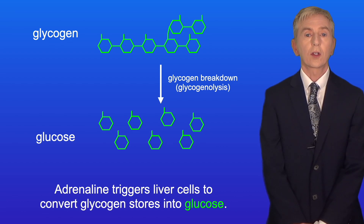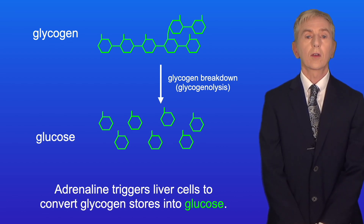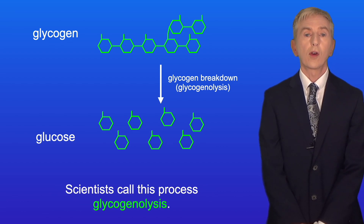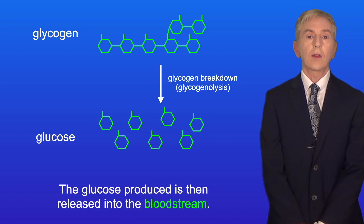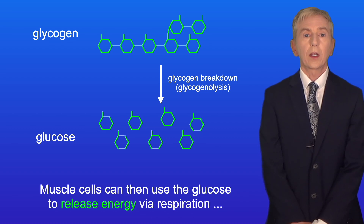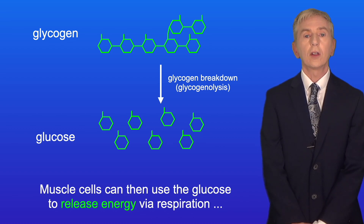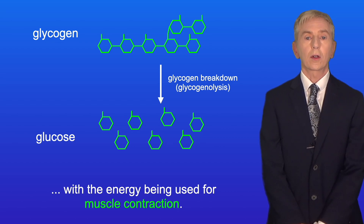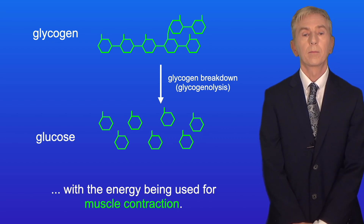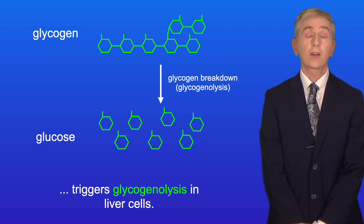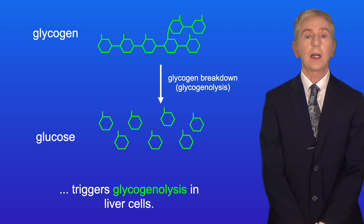Adrenaline triggers liver cells to convert glycogen stores into glucose. Scientists call this process glycogenolysis. The glucose produced is then released into the bloodstream. Muscle cells can then use the glucose to release energy via respiration, with the energy being used for muscle contraction. So in this video we're going to look at how adrenaline triggers glycogenolysis in liver cells.